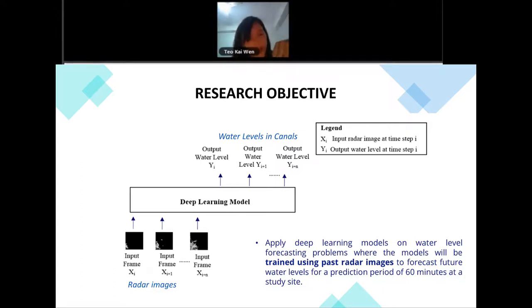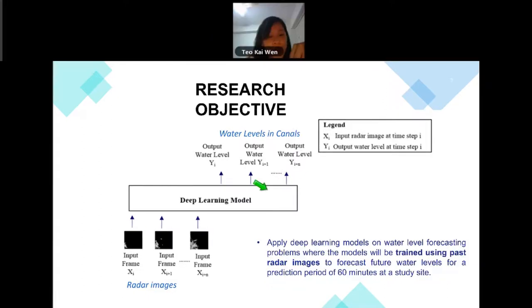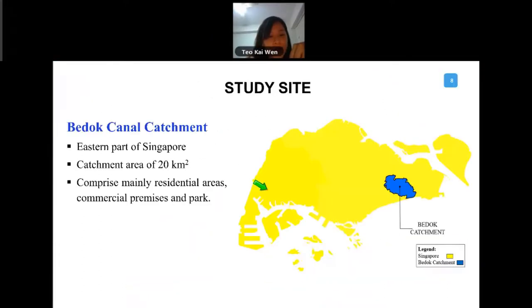What we want to do is we want to bypass, we want to just take in the radar images, and then predict water level directly. So from step two, all the way to the final step, bypassing all the intermediate predictions and the physically based model that we have. This is what we want to do.